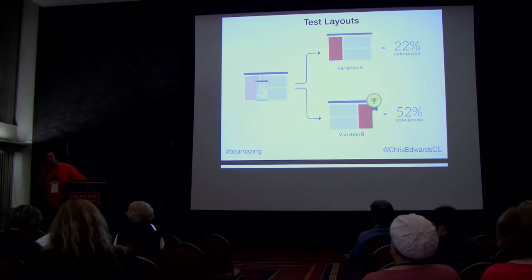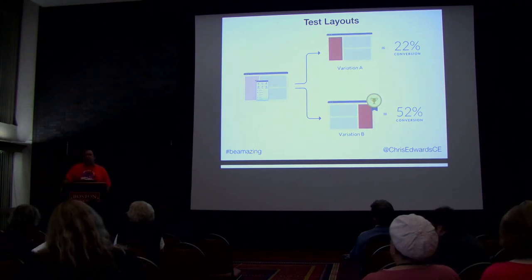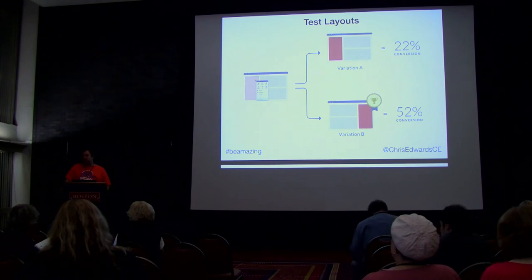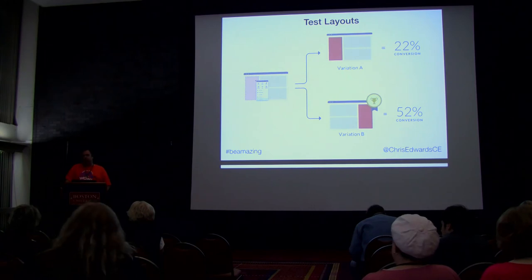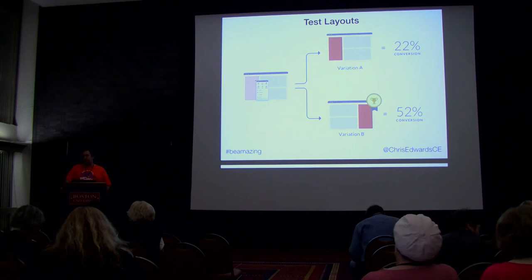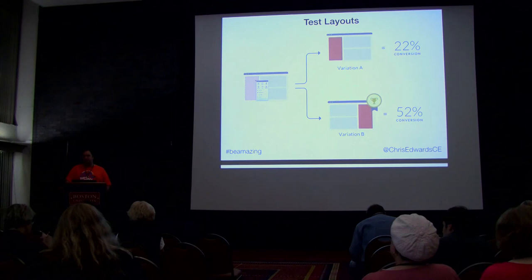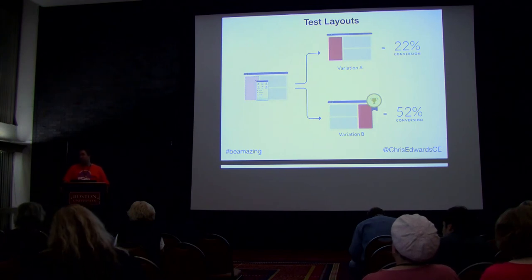Which software has scroll maps? Crazy Egg does. Inspectlet is another one — it has scroll maps, click maps, and heat maps. Inspectlet will also do a JavaScript recording of the screen, so you can actually watch live sessions of where people's mouse moves. Everything you do on someone's website is completely tracked — where you're clicking, where you're moving your mouse. Inspectlet does that as well. I think it's really cheap — like $10 a month.